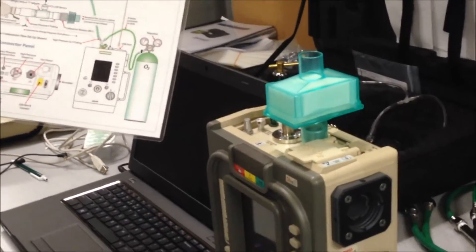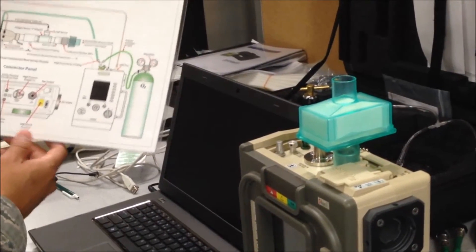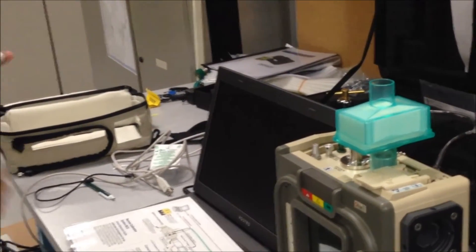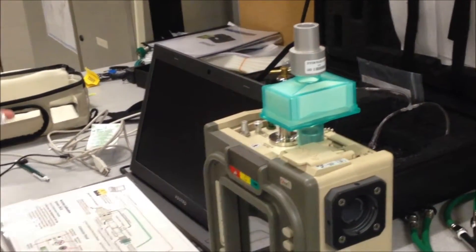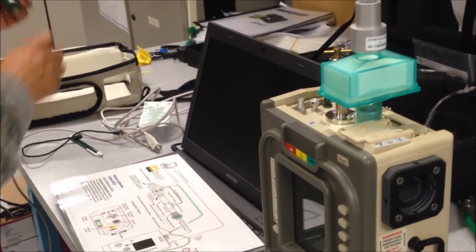Connect calibration resistor 1 and the airway pressure tubing.